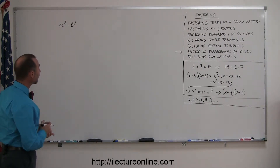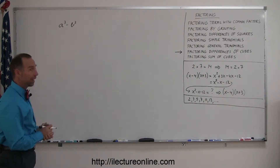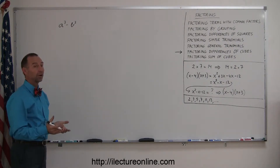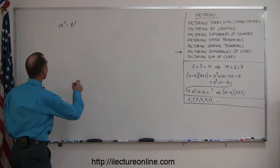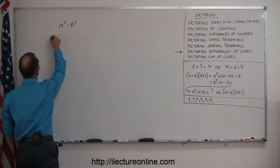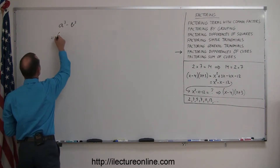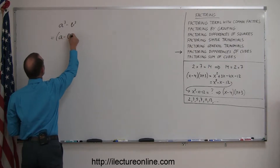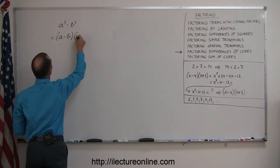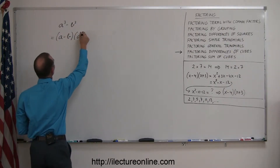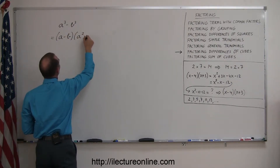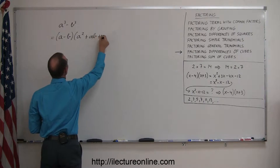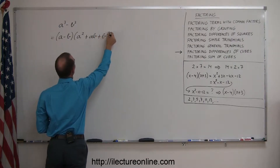The factored form of that is something you simply have to memorize. The factored form is A minus B, times A squared plus AB plus B squared.